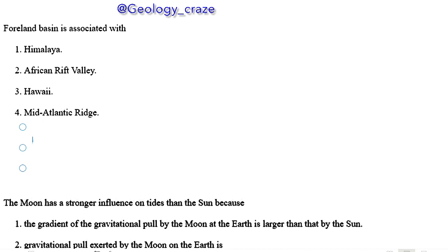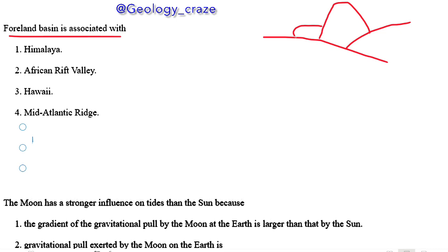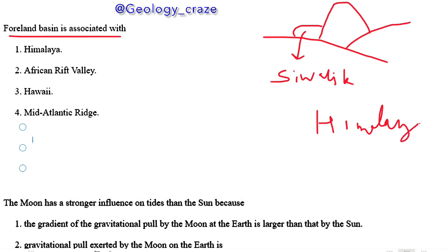The next question is: a foreland basin is associated with what? It is related with the plate that is subducting. Due to that, a mountain develops, and on that part we get the foreland basin — like the Siwalik basin. We call it a foreland basin, and it is part of the Himalaya. So the right answer is Himalaya.